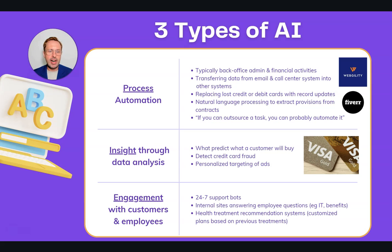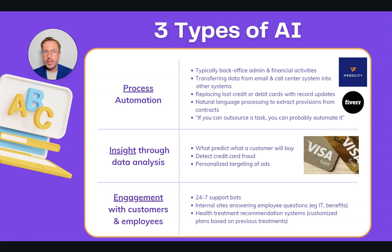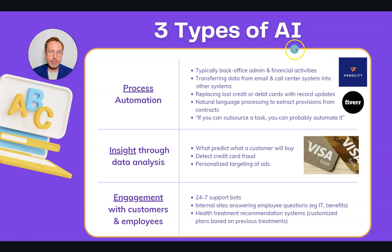The third type of AI is where you're using robots to engage with customers and employees. For example, 24/7 support chatbots, or internal sites where employees can ask questions about their benefits plans and IT support. Or something like a health treatment recommendation system where people receive customized health plans based on previous treatment they received.